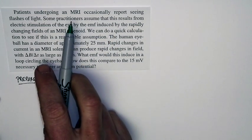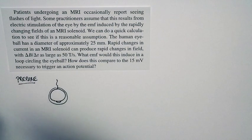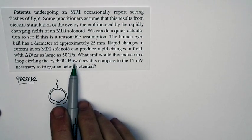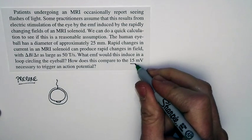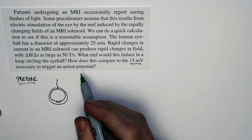And in fact, people in an MRI occasionally report seeing flashes of light. So we're going to compute an EMF due to a rapid change in magnetic field. We're going to compare that to the 15 millivolts necessary to trigger an action potential.